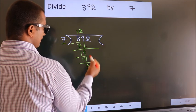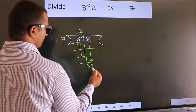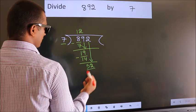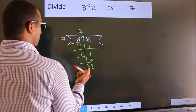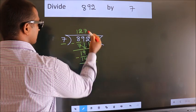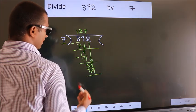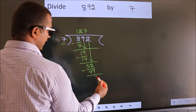After this, bring down the beside number. So 2 down. So 52. A number close to 52 in 7 table is 7 sevens 49. Now we subtract. We get 3.